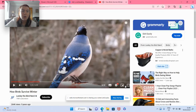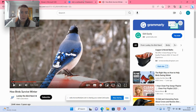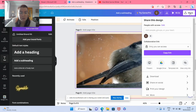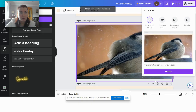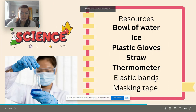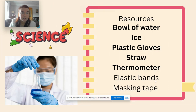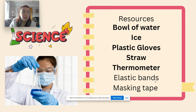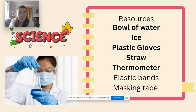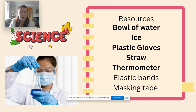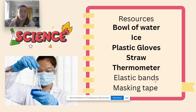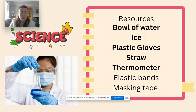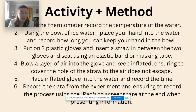So this is a prime example of how birds are able to maintain their insulation and keep warm and survive in very cold temperatures. This is exactly what we are going to do for our experiment today. The resources we need for this lesson are: a bowl of water, ice, plastic gloves, straws, a thermometer, elastic bands, and masking tape.